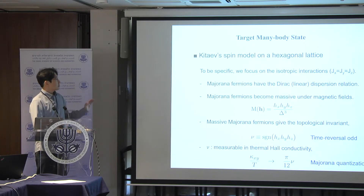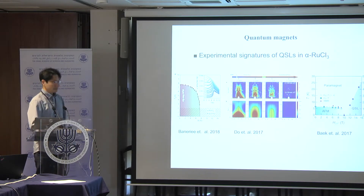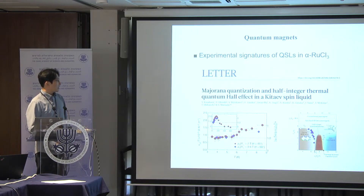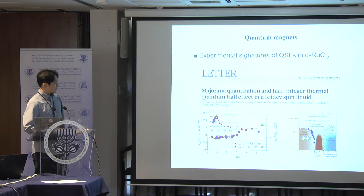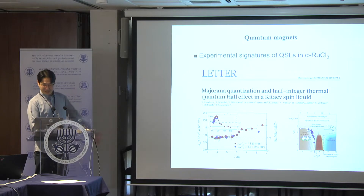Some experimentalists found a very good candidate material: alpha-RuCl3 as a quantum magnet. Probably one of the most important experiments with this material is the thermal Hall conductivity experiment. They measure the thermal Hall effect at low temperature, and the important feature is a one-half quantization — this material shows a kind of half-quantization Majorana quantization. So lots of people became more interested in this material.